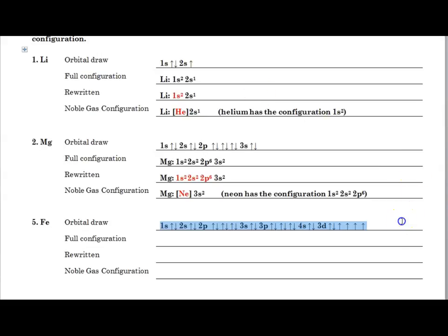So there is the orbital drawing, 1s with 2 electrons, 2s with 2, 2p with 6, 3s with 2, 3p with 6, 4s with 2, 3d with 1, 2, 3, 4, 5, and 1 is 6. So then we would write that out as our one line electron configuration.